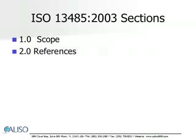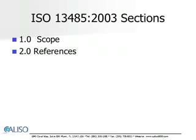Section 2.0 is the reference section. It references ISO 9000:2005, quality management systems, fundamentals, and vocabulary. Please note that the ISO 13485 standard has not been revised since 2003. Therefore, the reference included in this section of the standard still reflects ISO 9000:2000 quality management systems, fundamentals, and vocabularies. Our online classes have specifically been updated to the 2005 standard.